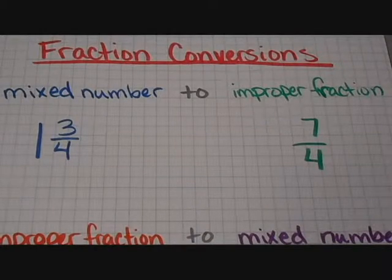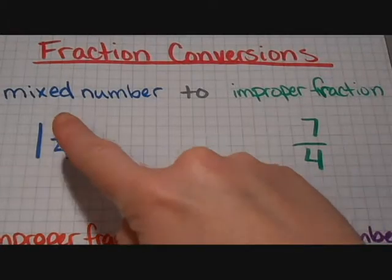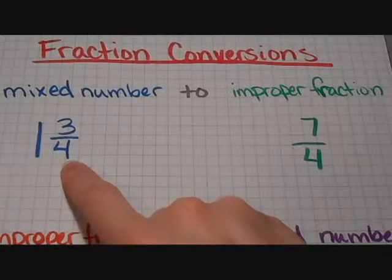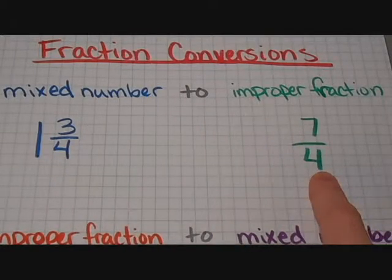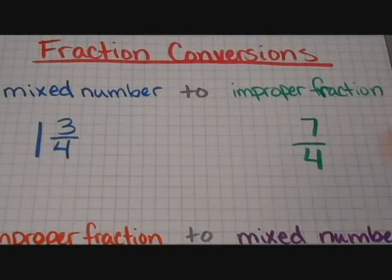This is just how to work with mixed numbers, improper fractions, whole numbers, and how to convert from one to the other. I'm going to start here with this mixed number, 1 and 3 fourths, and show you how to convert that into an improper fraction, which is equal to 7 fourths.